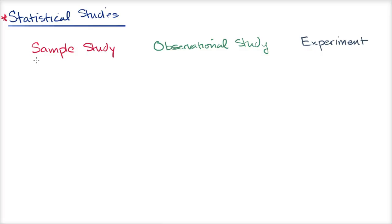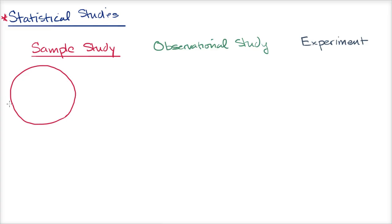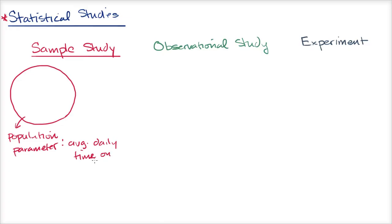A sample study is really where you're trying to estimate the value of a parameter for a population. For example, take the population of people in a city — that could be hundreds of thousands of people — and the parameter you care about is how much time, on average, they spend on a computer. The population parameter would be average daily time on a computer. If possible, you'd talk to every person — maybe a million people — and get the average. But since that's impractical, you do a sample study instead.